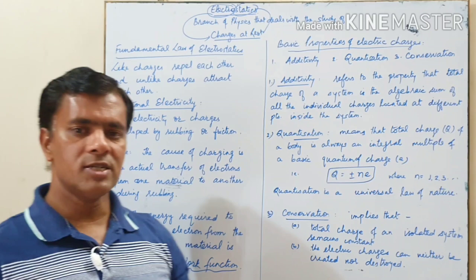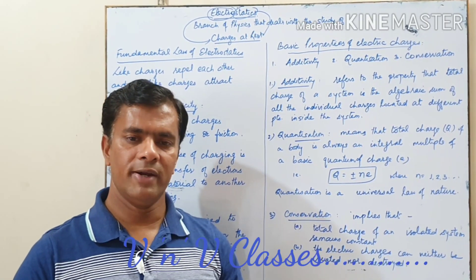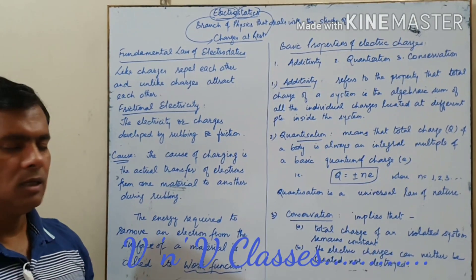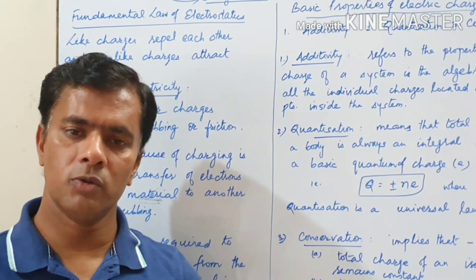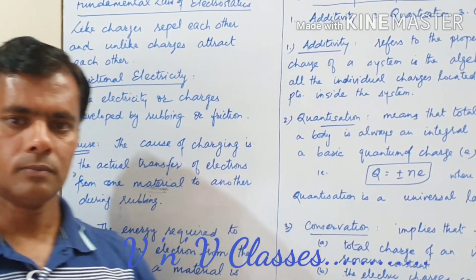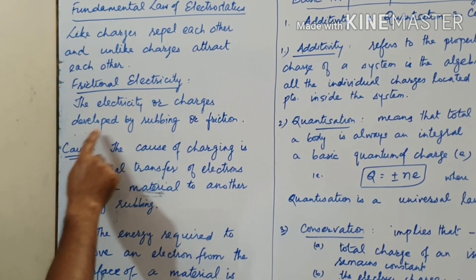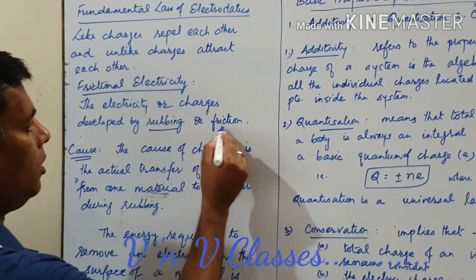Now the charges can be developed in various methods. First of all we are discussing about the frictional electricity, that is the charging of a body by rubbing two bodies together or by producing a friction between them. This is that electricity or charges developed by rubbing or friction.